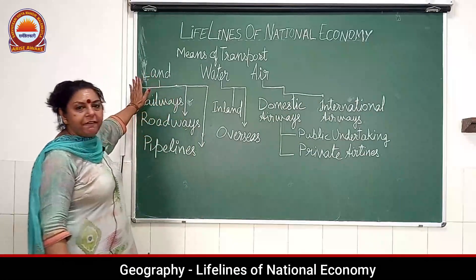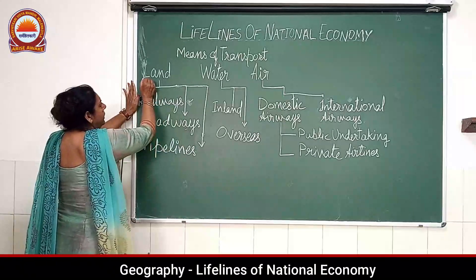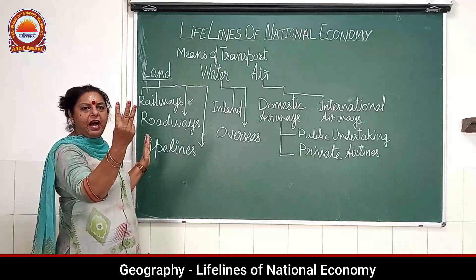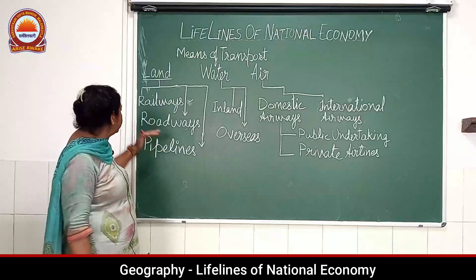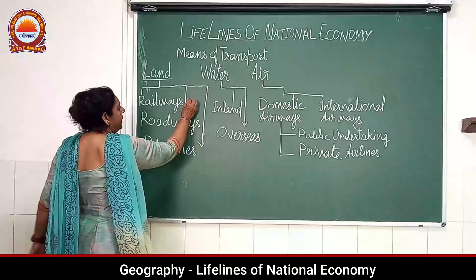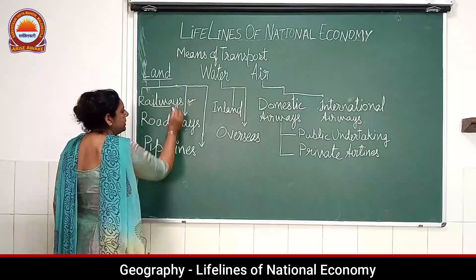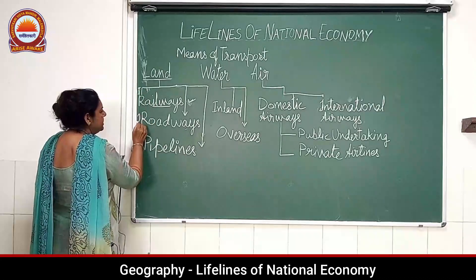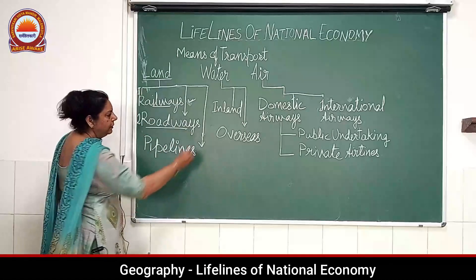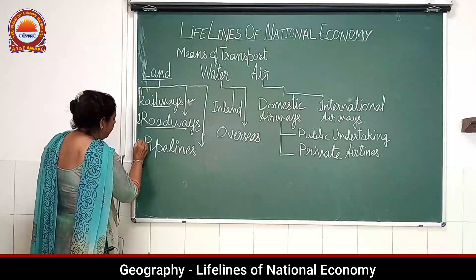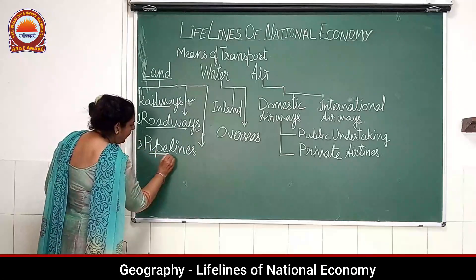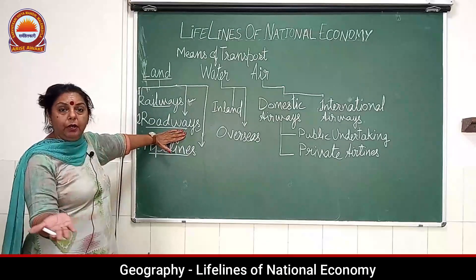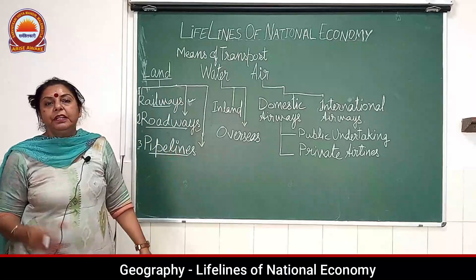Coming to the first aspect, that is land. On land, we have three aspects of transportation: the first one is railways, the second one is roadways, and the third one is pipelines. Railway and roadways we already know about — there are so many different things that could be used for the aspect of roadways and railways.